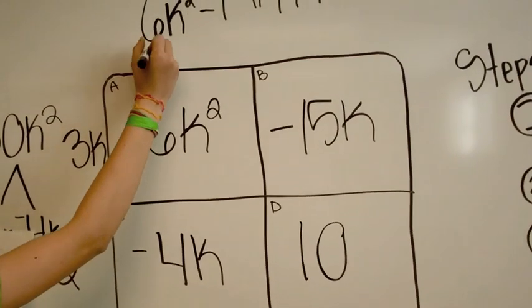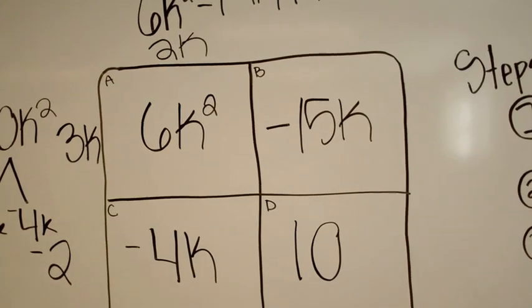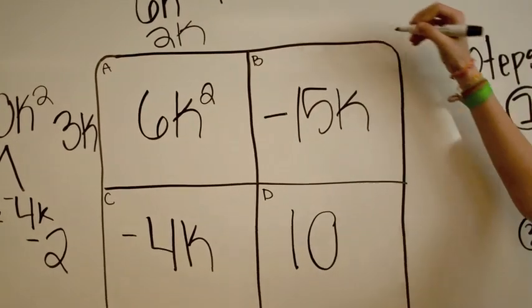Now we need to find a common multiple for box C and A. Now we need to find a common multiple for box D and B.